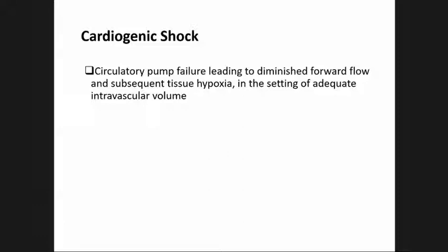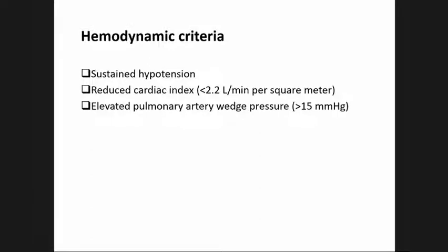Cardiogenic shock is circulatory pump failure leading to diminished forward flow and subsequent tissue hypoxia in the setting of adequate intravascular volume. Hemodynamic criteria include sustained hypotension, reduced cardiac index of less than 2.2 L/min/m², and elevated pulmonary artery wedge pressure of more than 15 mmHg.